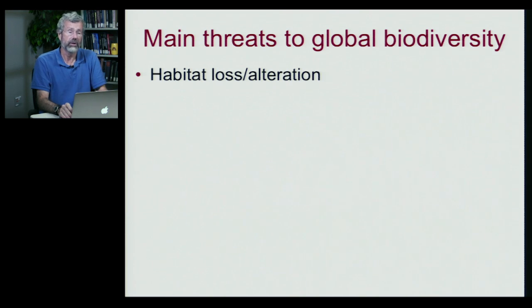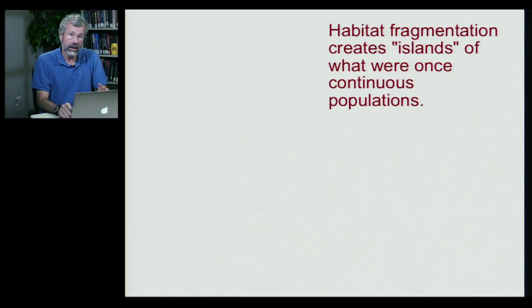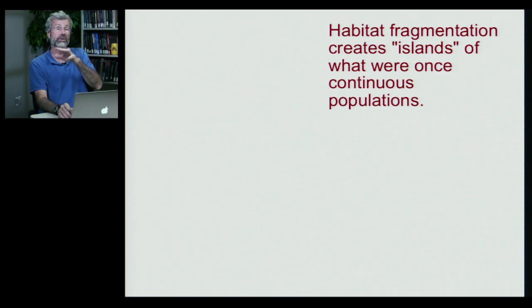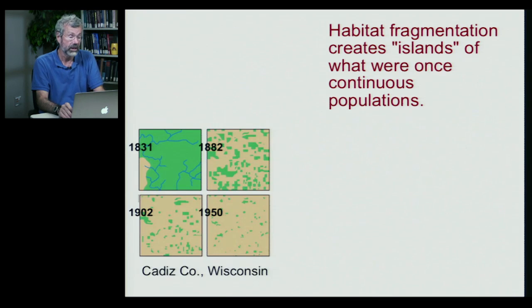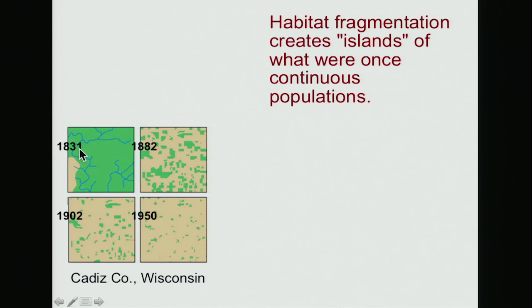First is the impact we're having on habitat — how we're altering it and converting it to other purposes. This can be seen as a process called habitat fragmentation, which creates islands of natural habitat out of what once was large continuous ecosystems. This is illustrated with a map of Cadiz County in Wisconsin. In 1831, the entire county was covered in forest. By 1882, much of that forest had been converted to farms, with fields cleared leaving just a few patches.